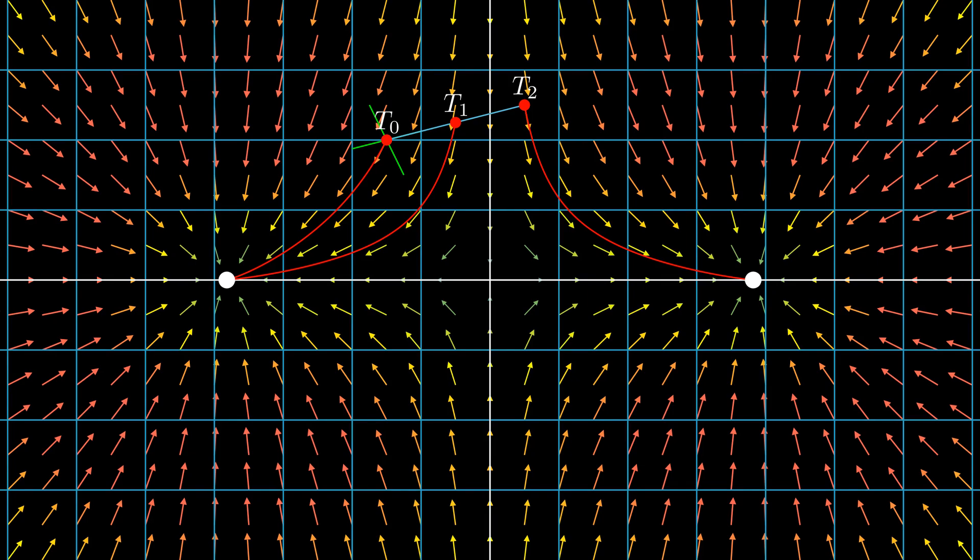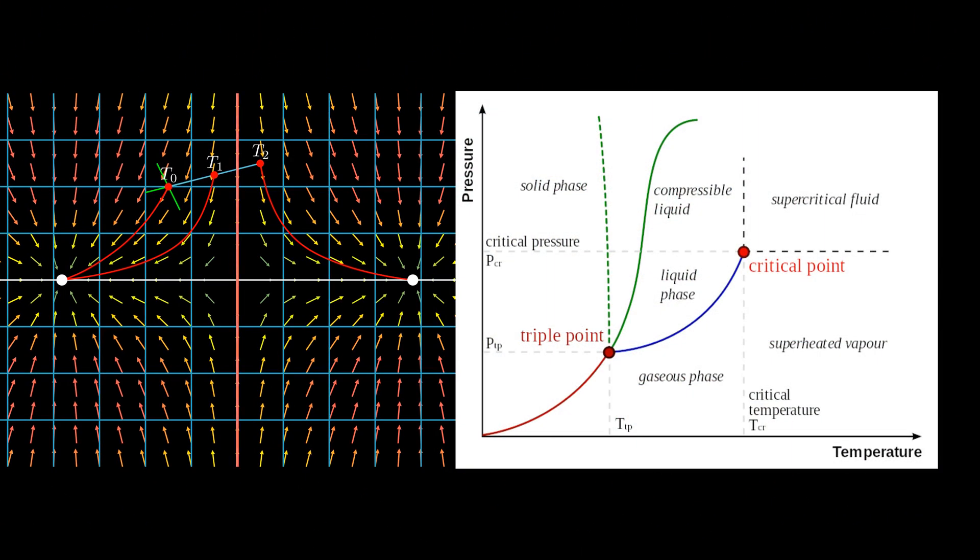This boundary defines a phase transition, and a similar boundary is what leads ice to suddenly melt at a particular temperature and pressure, for water to boil, and for basically any other phase transition seen in nature to happen. Where this boundary line intersects different lines of constant temperature or pressure is what defines the shape of boundaries in phase diagrams.